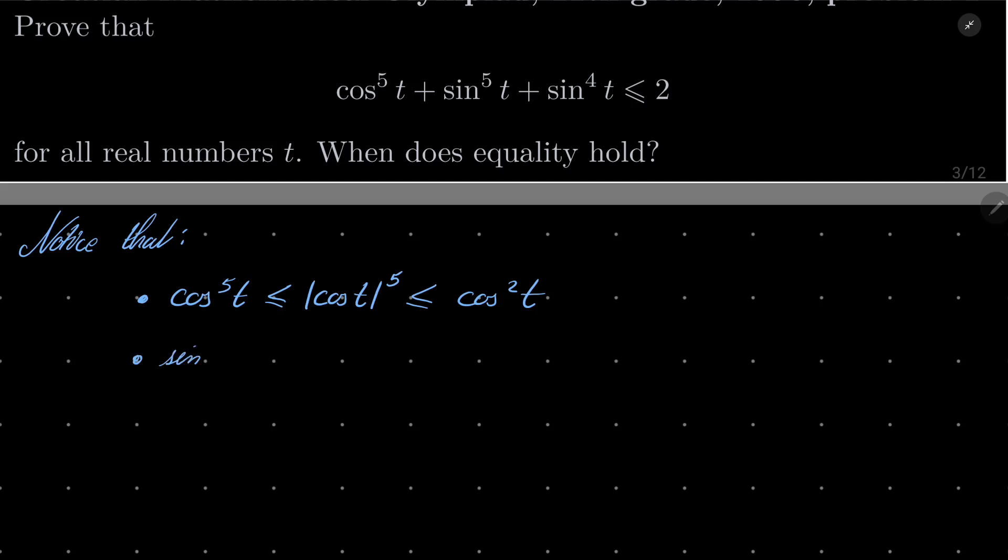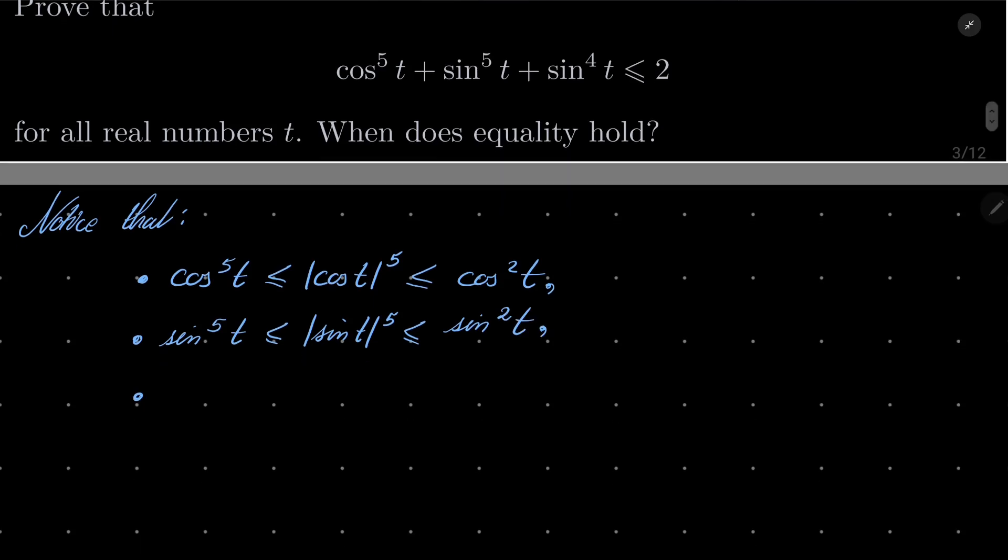In the same vein, sine to the 5th power of t is less than or equal the absolute value of sine of t to the 5th power, and that is less than or equal sine squared of t as well. Finally, sine to the 4th power is also obviously less than or equal 1.